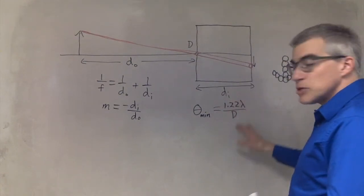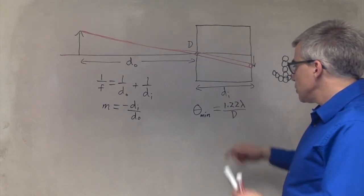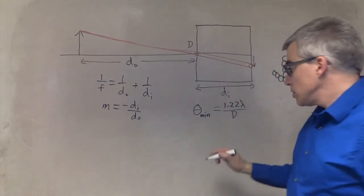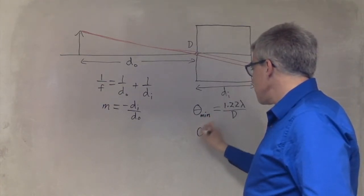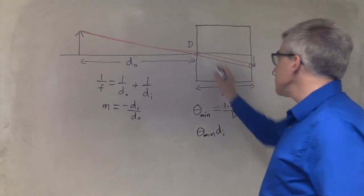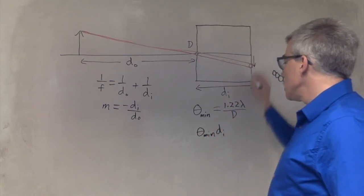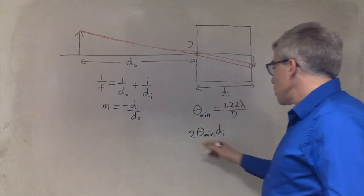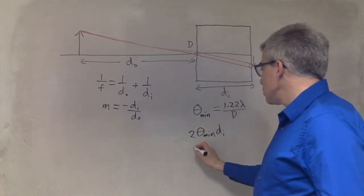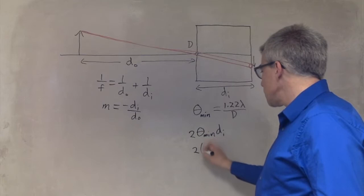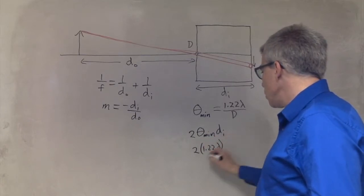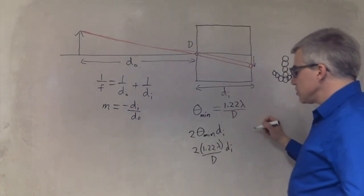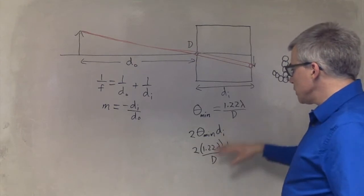So how are we going to optimize this? Theta min is 1.22 lambda over D. And the size of the diffraction central maximum is going to be theta min times dI, like it's an arc of a circle, times 2, because we want the angular diameter. So 2 theta min dI would be 2 times 1.22 lambda over D times dI. And we would like this to be small.